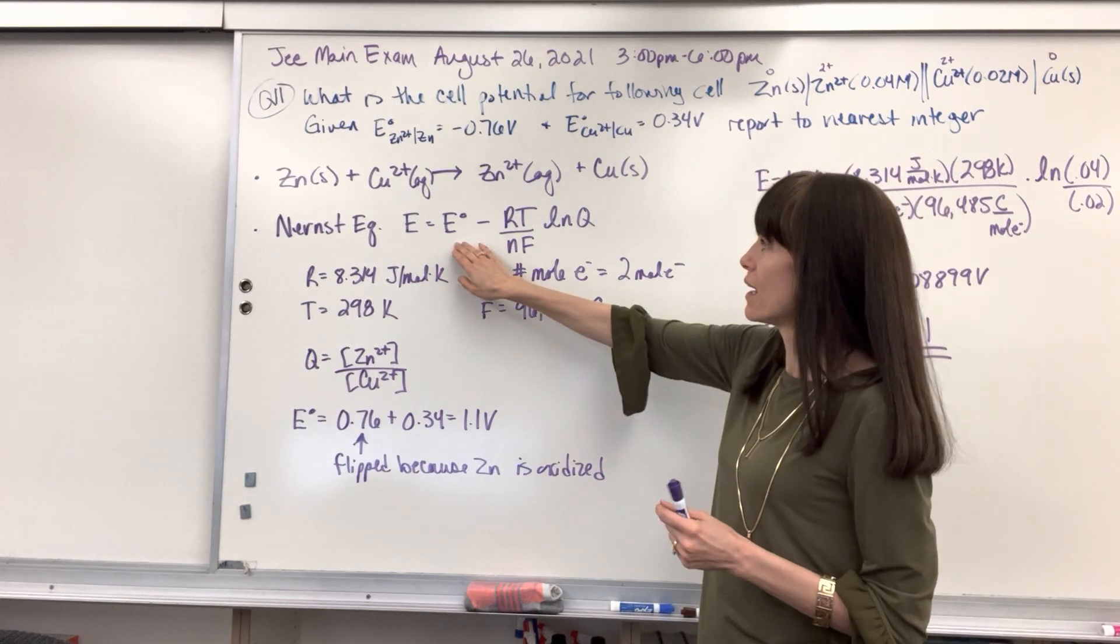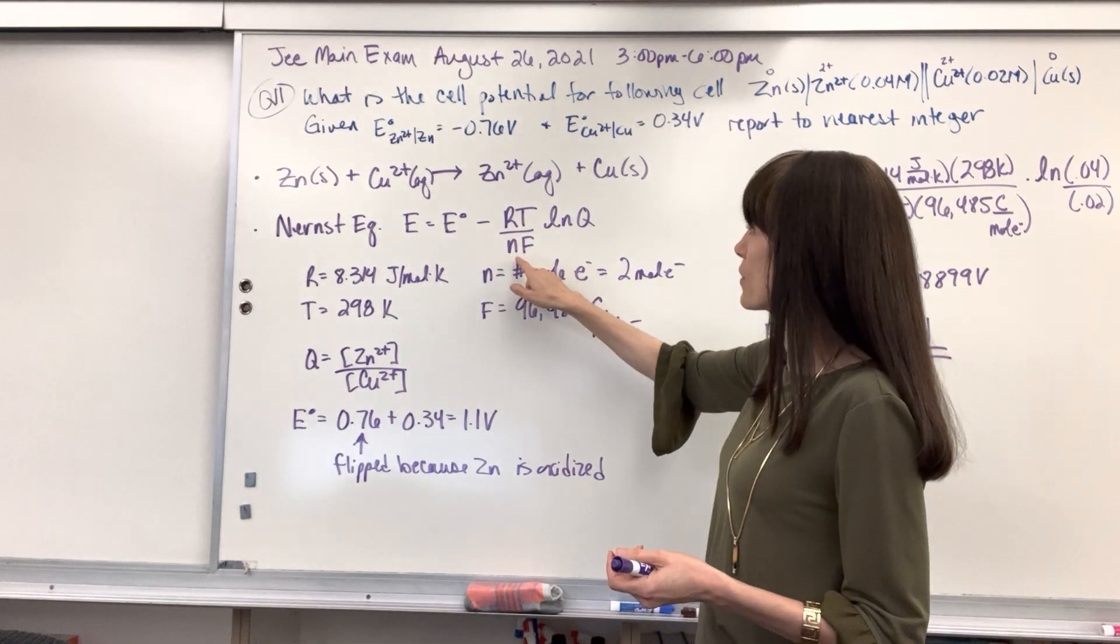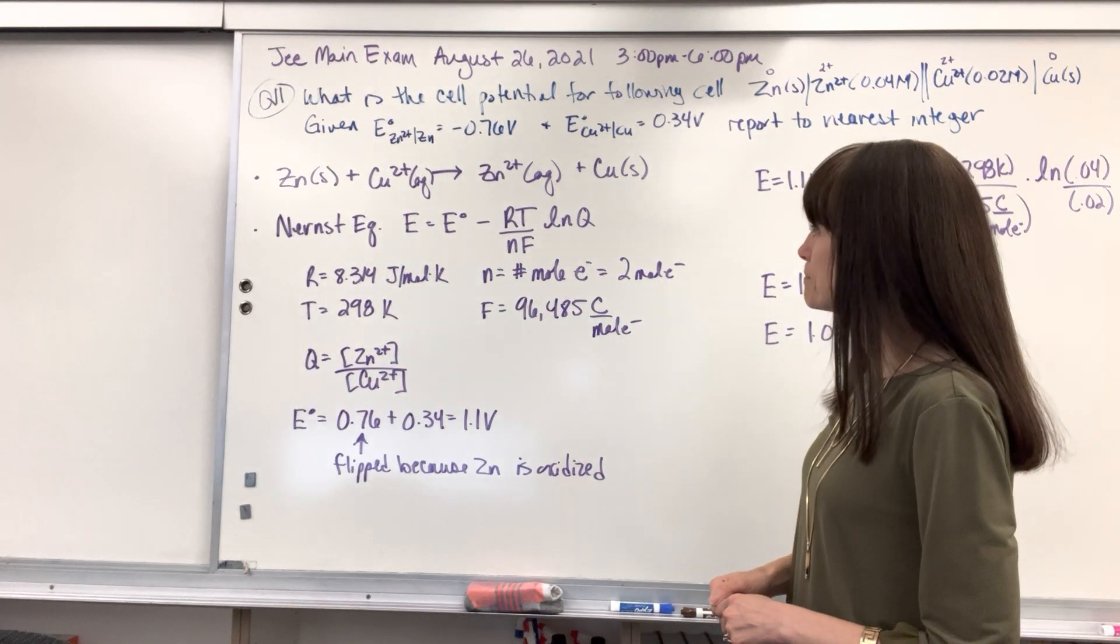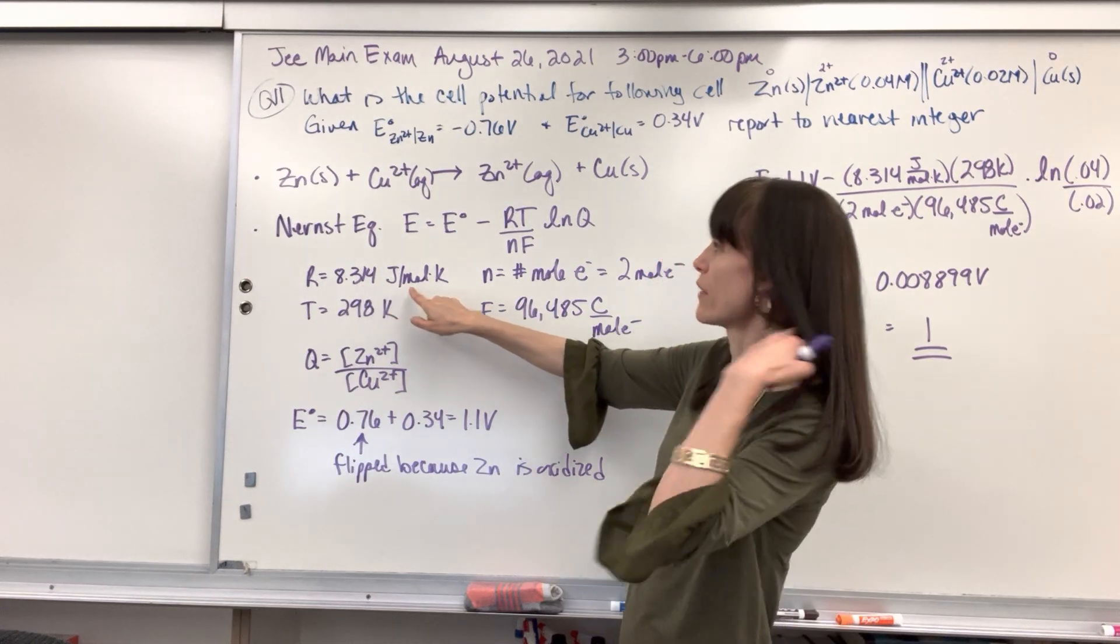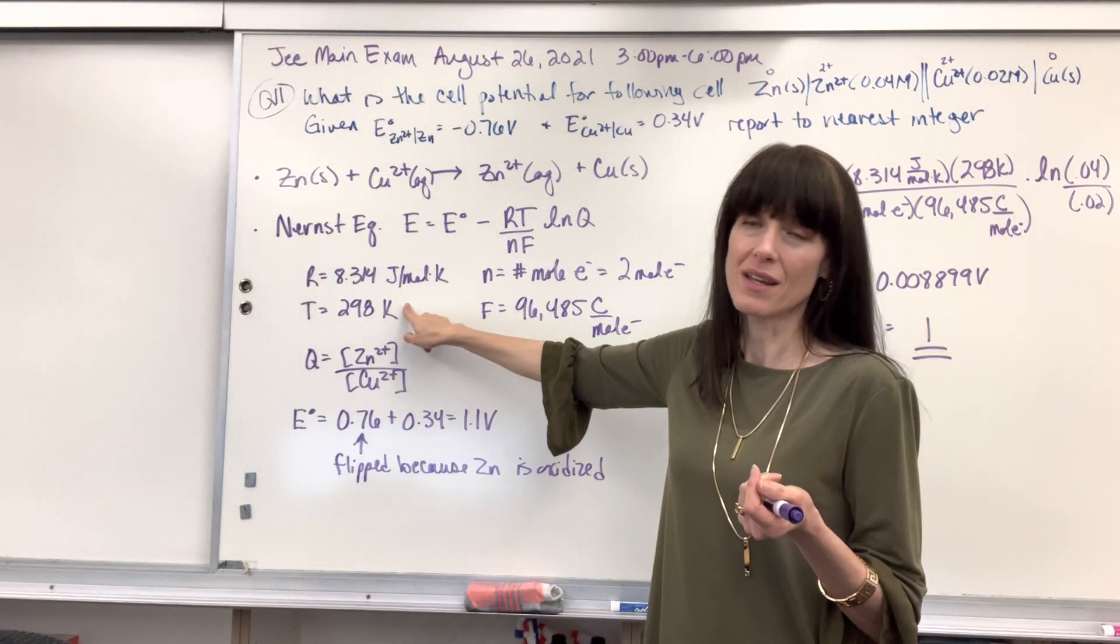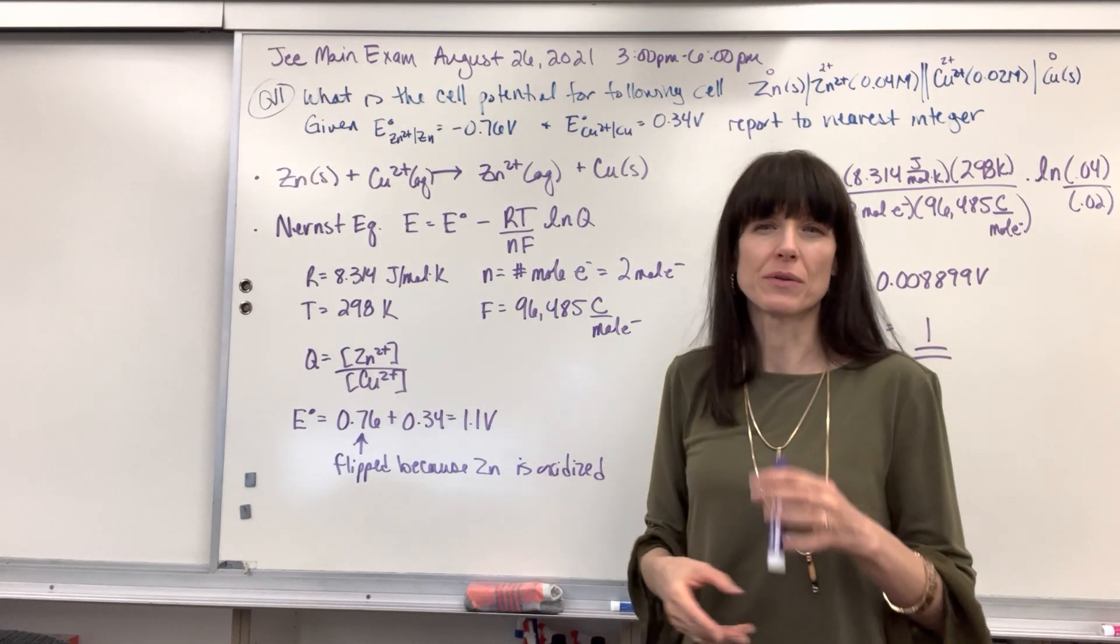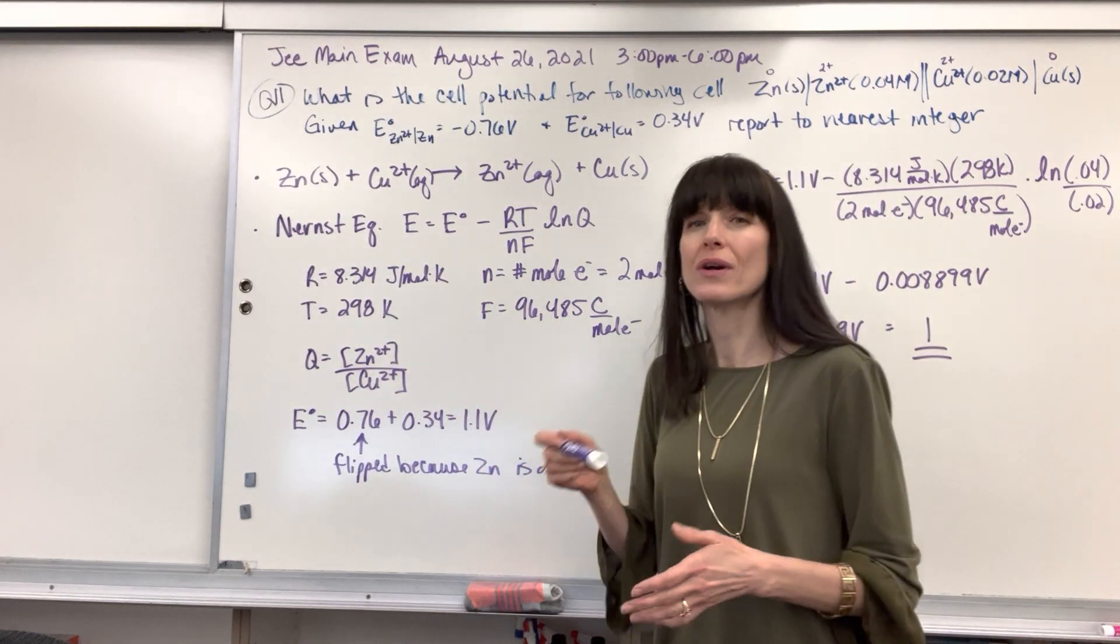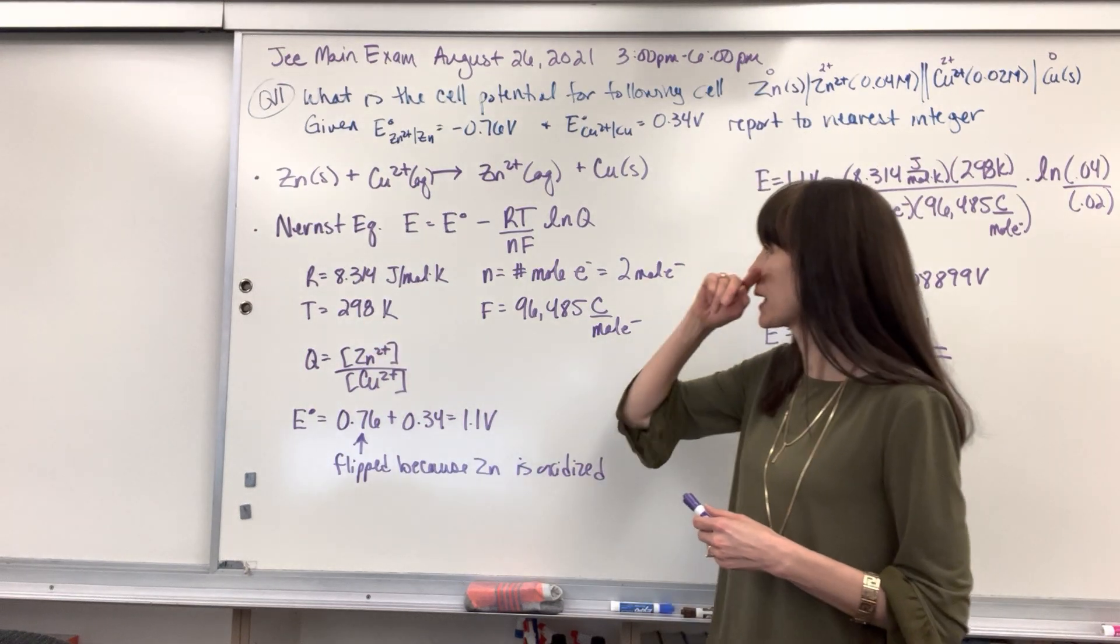So E is the cell potential at non-standard conditions. Our formula is E° minus RT over NF times the natural log of Q. Let's review all of these. We're going to have R, that's your gas constant, 8.314 joules divided by mol times Kelvin. I know to use this rather than the 0.0821 because I'm not dealing with pressure, I'm dealing with energy. So I need the joules right here. Temperature, we're going to assume that we're at 25 degrees C because they didn't give us that information, so 298 Kelvin.